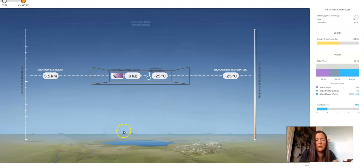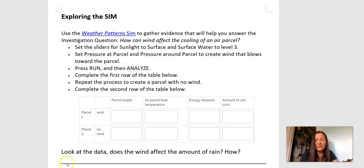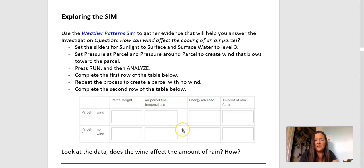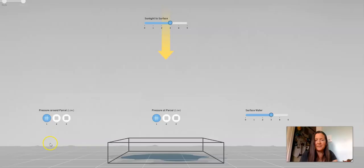Okay. So let's go back and look at our data table. Here's my data table. So in my parcel two with no wind, my parcel height was 5.5, and my air parcel final temperature, I think, was negative 25. Take a quick look. Yep. 5.5 and negative 25. And my rainfall level was one. And my energy out was 108. All right. So I put that all into my chart. Now I'm going to go back and I'm going to run the one with the wind again so that we can see that one more time how that was impacted.